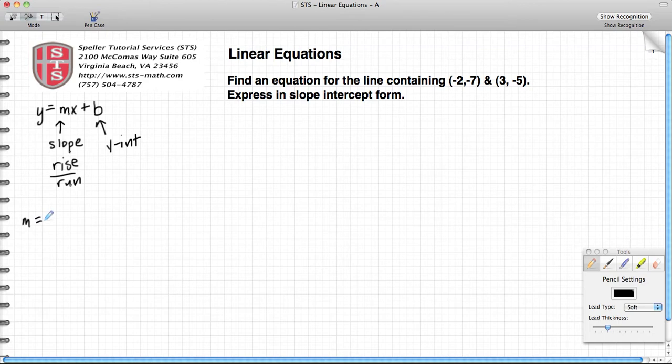First thing we need to find is our slope. The slope is not given to us, but we can derive it based on the two points we have. Let's label each coordinate on these points. We're going to label the first point x1, y1 and the second one x2, y2, where x1 corresponds to -2, y1 corresponds to -7, x2 corresponds to 3, and y2 corresponds to -5.